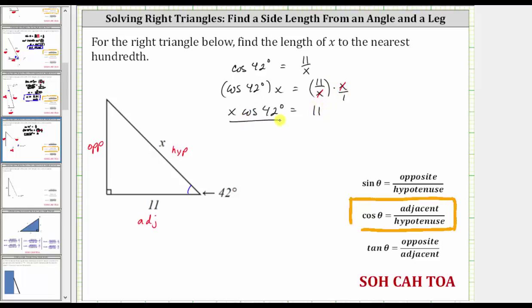And now to solve for x, we divide both sides by cosine 42 degrees. Simplifying, cosine 42 degrees divided by itself simplifies to one, giving us x equals eleven divided by cosine 42 degrees.